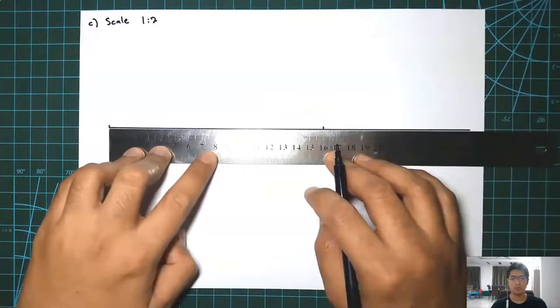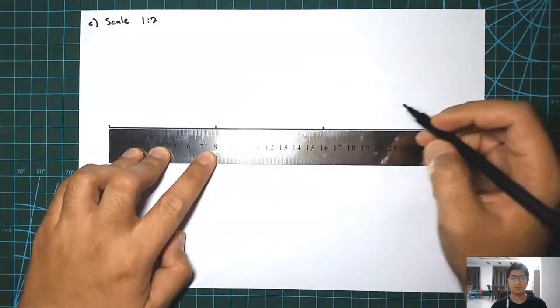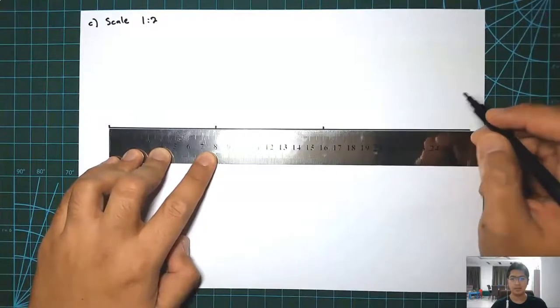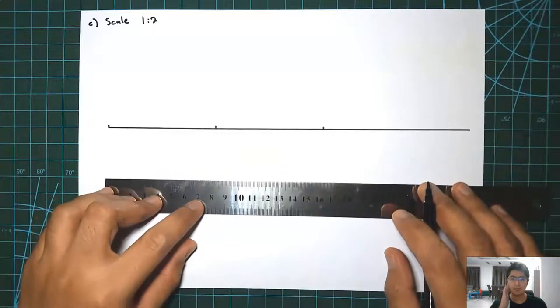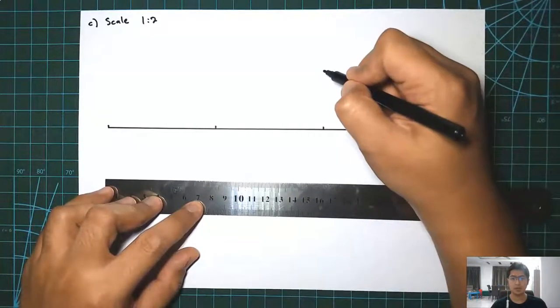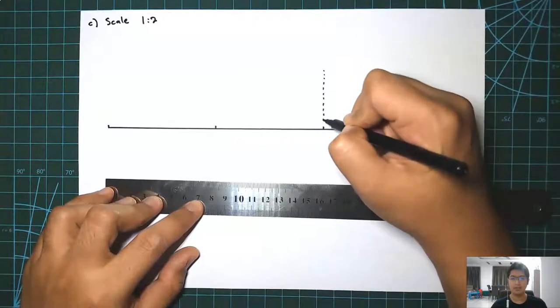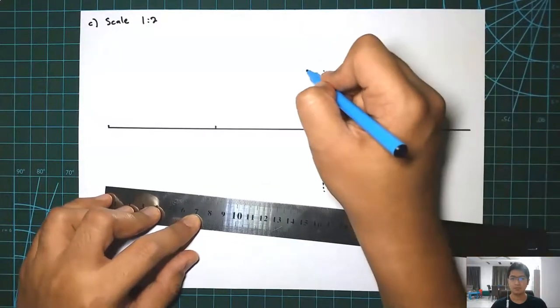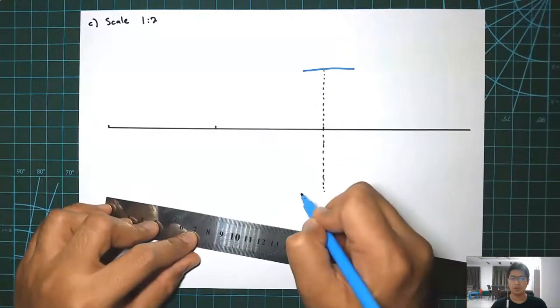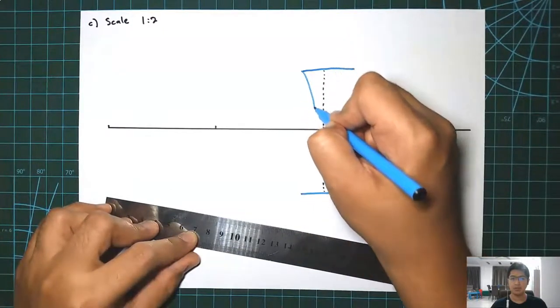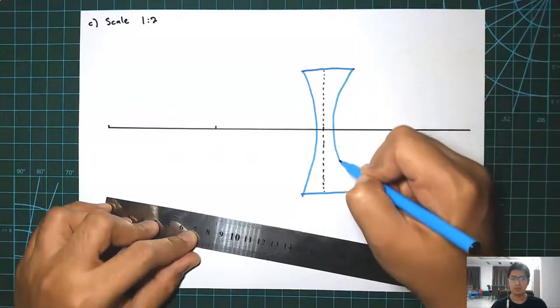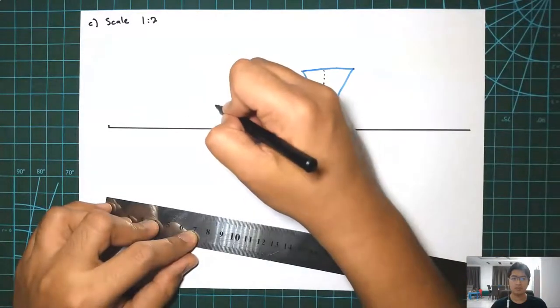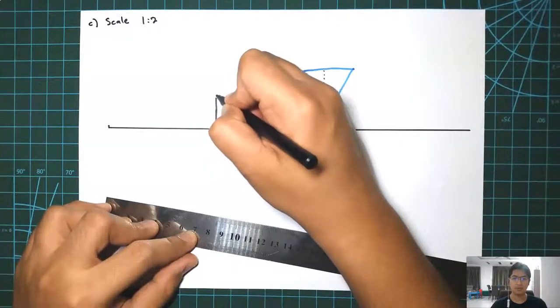Just wait for me to draw the lines. So this is the diverging lens. For the diverging lens, the edge will be thicker than the middle. And then this is the object.